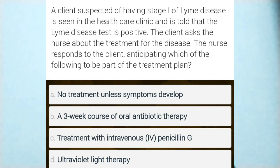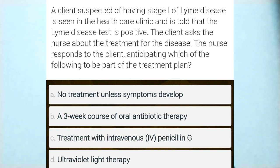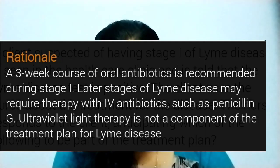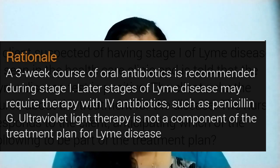Question two: a client suspected of having stage 1 Lyme disease is seen in a healthcare clinic and is told the Lyme disease test is positive. The client asks the nurse about treatment. The options are: (1) no treatment unless symptoms develop, (2) a three-week course of oral antibiotics, (3) treatment with IV penicillin, or (4) ultraviolet light therapy. The answer is option 2 — in stage 1 of Lyme disease, a three-week course of oral antibiotics is recommended. In later stages, IV antibiotics are given.